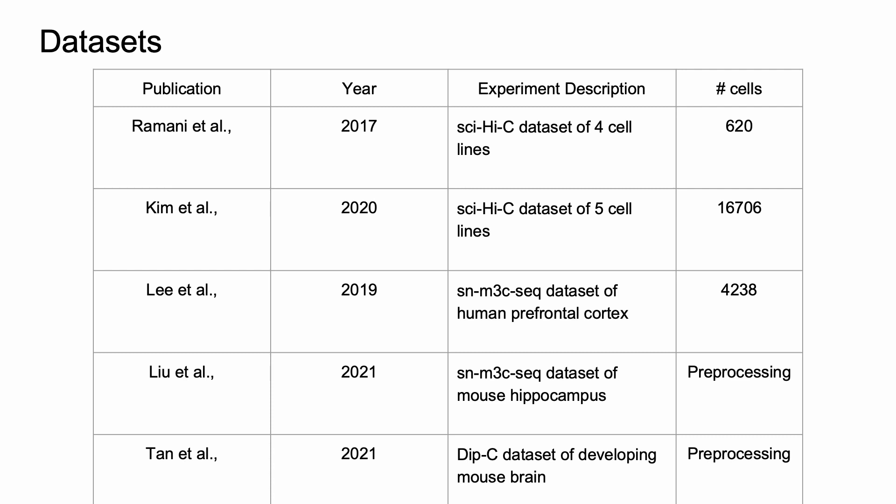There are several public datasets already available in this field. The most commonly used ones are Ramani, Kim, and the Lee datasets. They are always used in each method since their ground truths are available and they are very well analyzed. The Ramani data consists of 620 cells, the Kim data consists of very similar cell lines with 16,706 cells, and the Lee data has 4,238 cells.